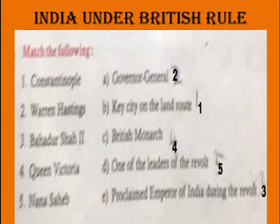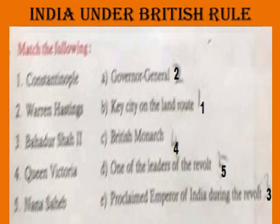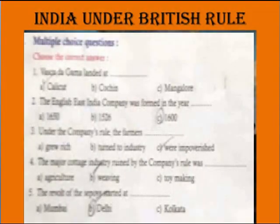Bahadur Shah II — Proclaimed Emperor of India during the revolt. Queen Victoria — British Monarch. Nana Saheb — One of the leaders of the revolt. Vasco da Gama landed at Calicut.